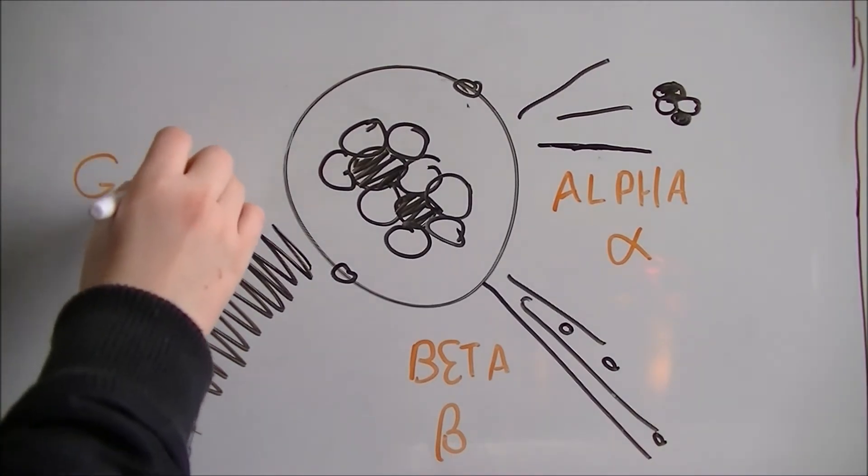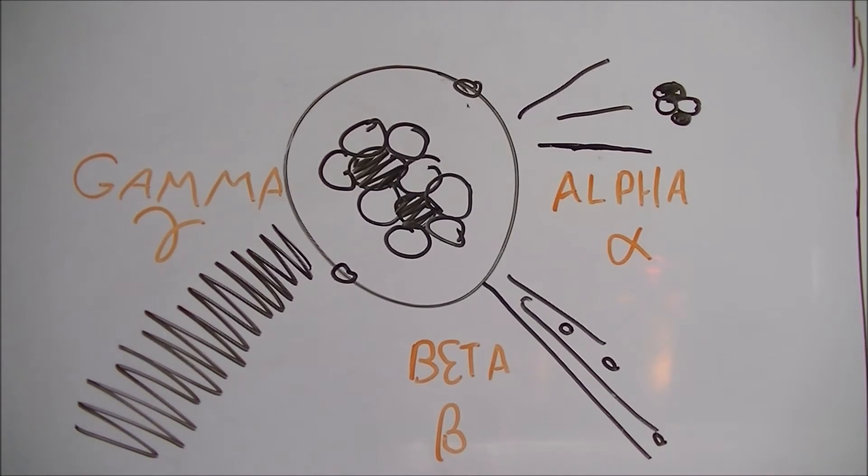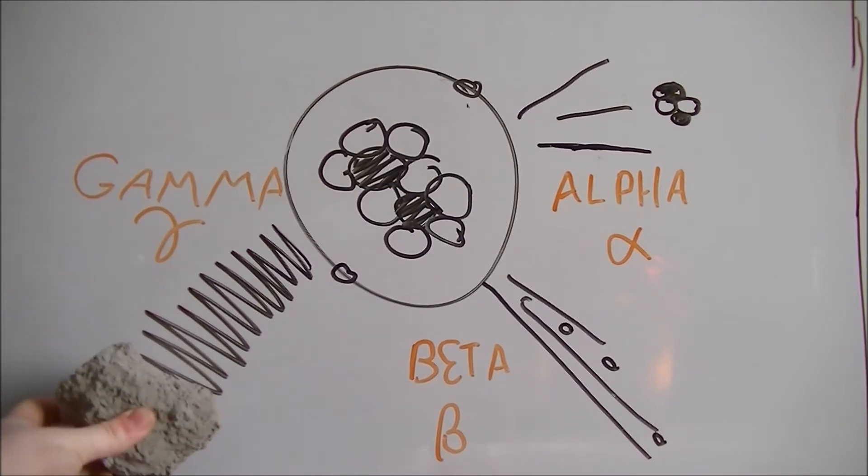Gamma radiation is the most dangerous as it consists of the atom emitting electromagnetic waves that can cause serious damage to a being's DNA and can only be stopped by a thick piece of concrete or lead.